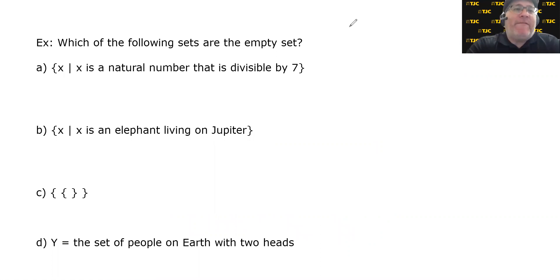So let's take a look at some examples and try to figure out which of the following sets are the empty set. We've got two in set builder notation, one in descriptive method, which is the bottom one. And we'll figure out what's going on with the third one here in a moment. But let's start with A, the set of containing the set of X's such that X is a natural number that is divisible by 7.